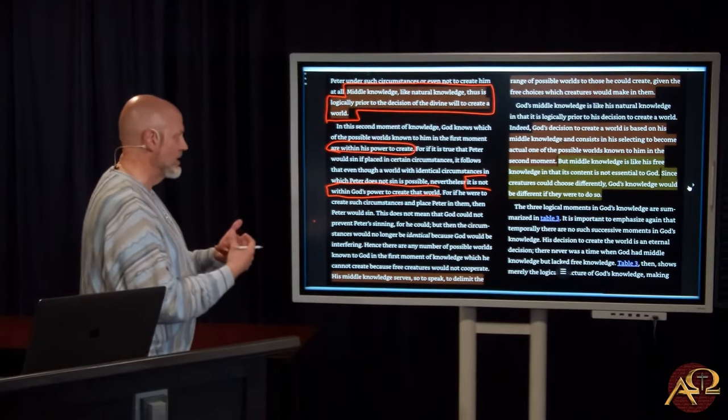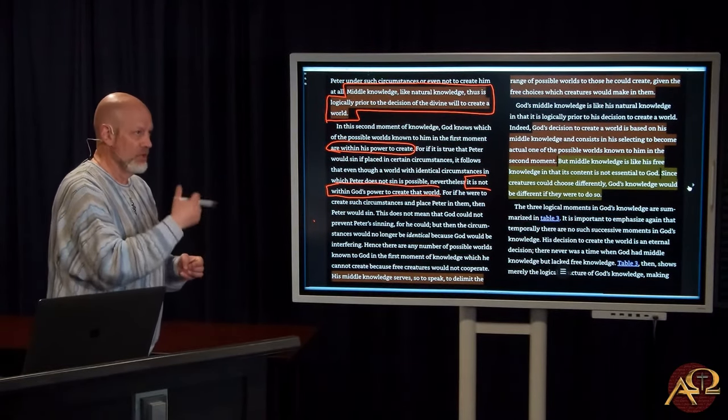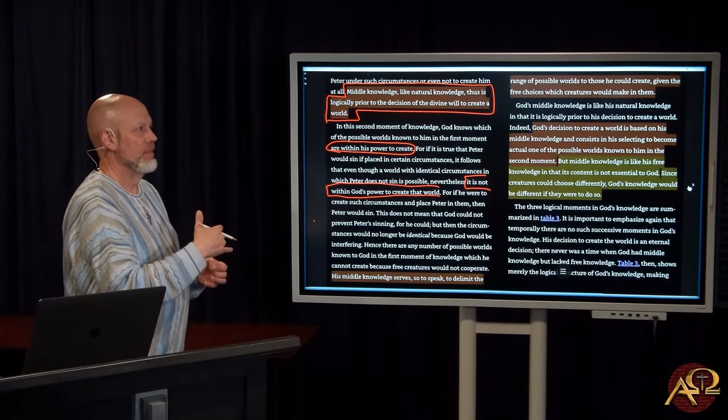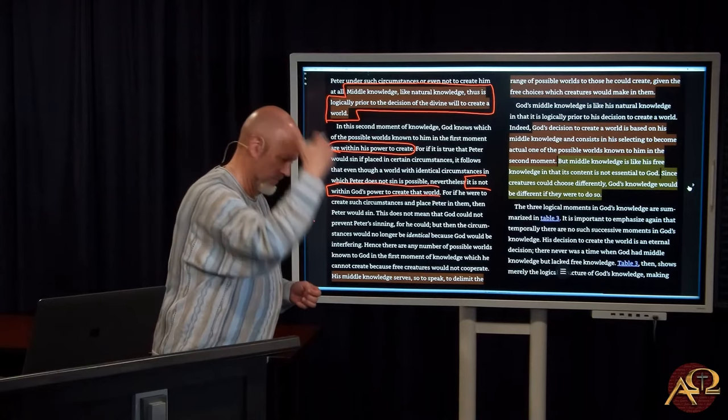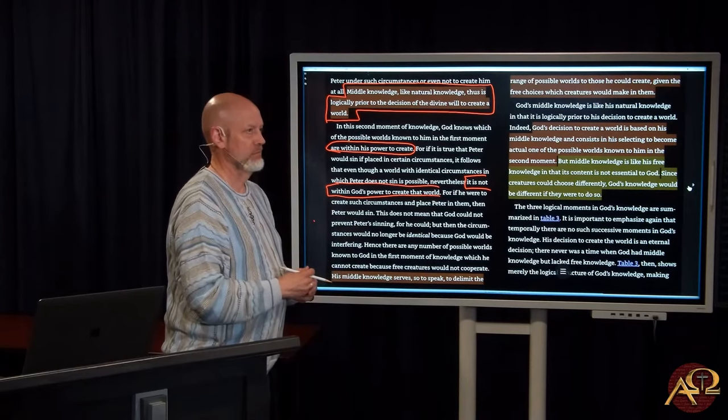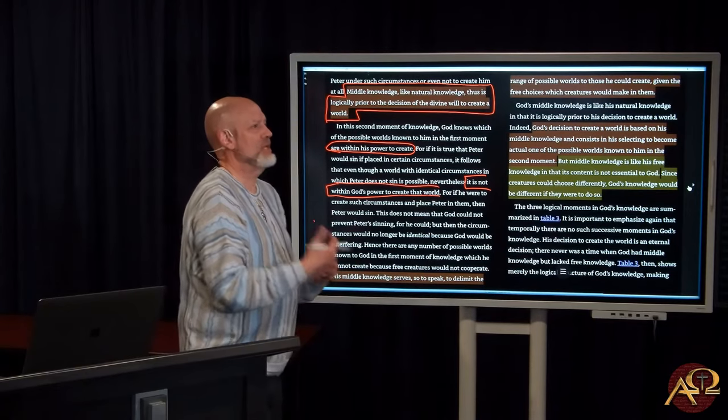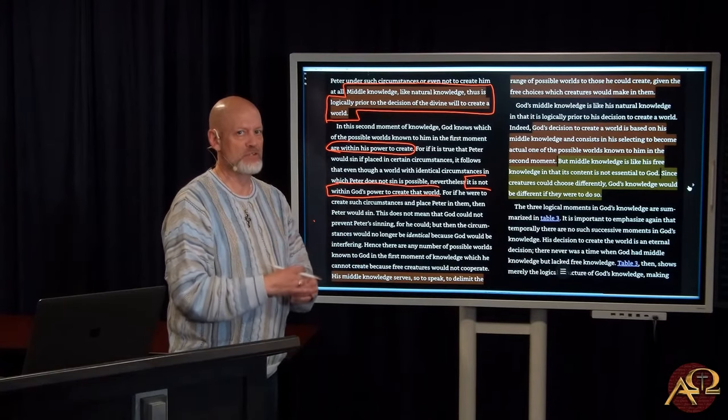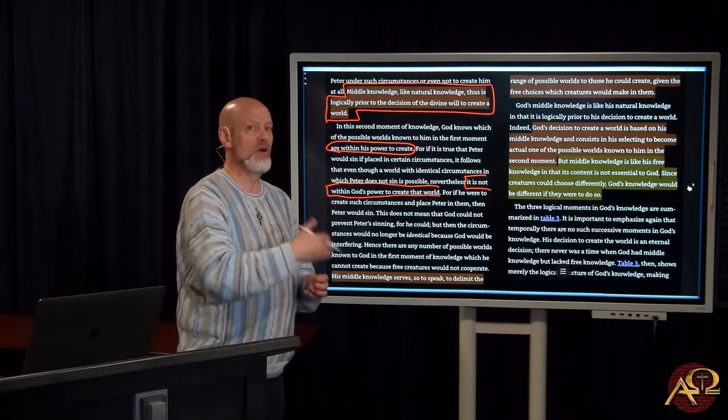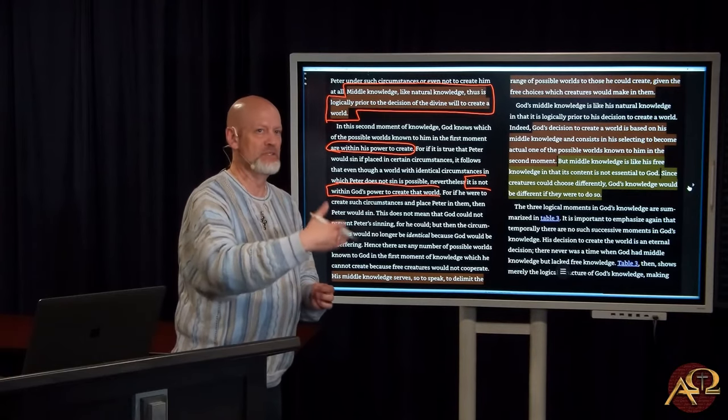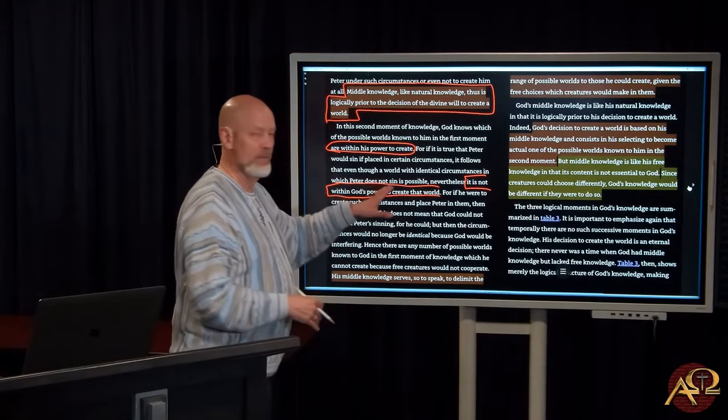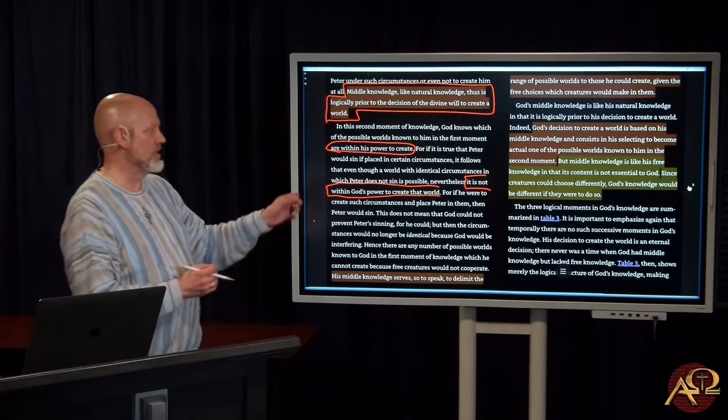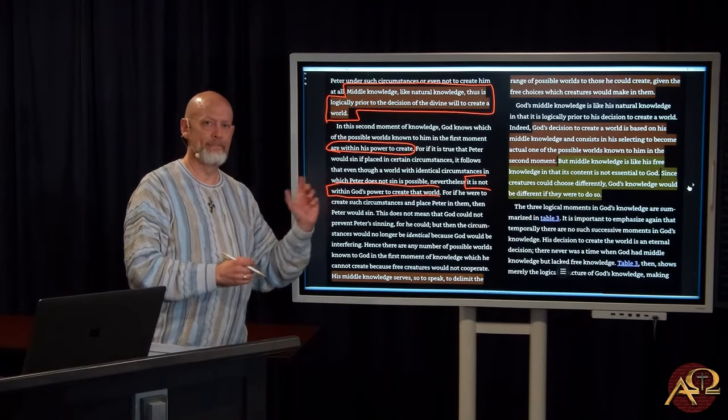It is not within God's power to create that world because middle knowledge tells him that Peter would do this thing. How has Peter been defined in such a way as to have this certainty of knowledge, so much so that it limits God's ability to create a world that he may desire to? God's freedom is limited by middle knowledge. Where does that come from?